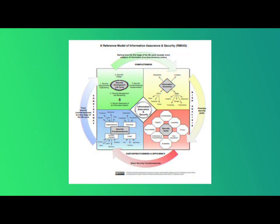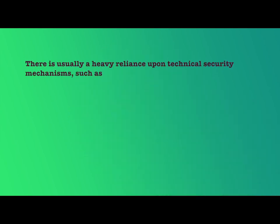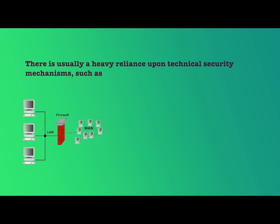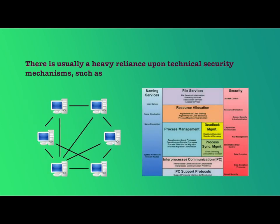To respond to the threats, organizations implement information security plans to establish control of information assets. Information security plans specify protection mechanisms for organizational information. There is usually a heavy reliance upon technical security mechanisms such as firewalls, user passwords, closed networks, and operating system protection mechanisms.